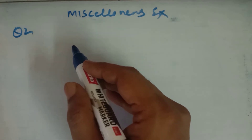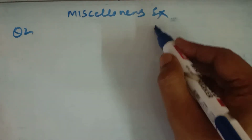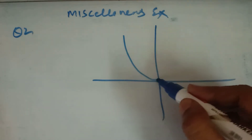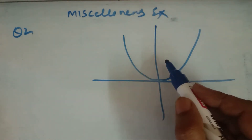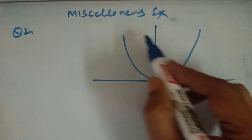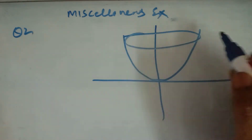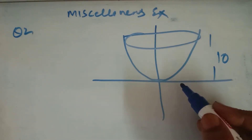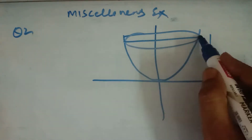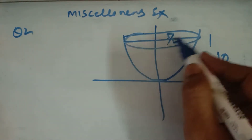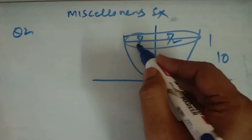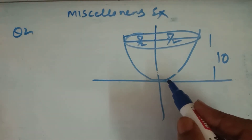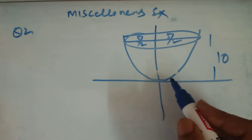In question number 2, an arc in the form of a parabola with the axis vertical is given. This arc is 10 meters high and it is 5 meters wide at the base — so 5/2 on each side since it is symmetrical. You have to find how wide it is 3 meters from the vertex.